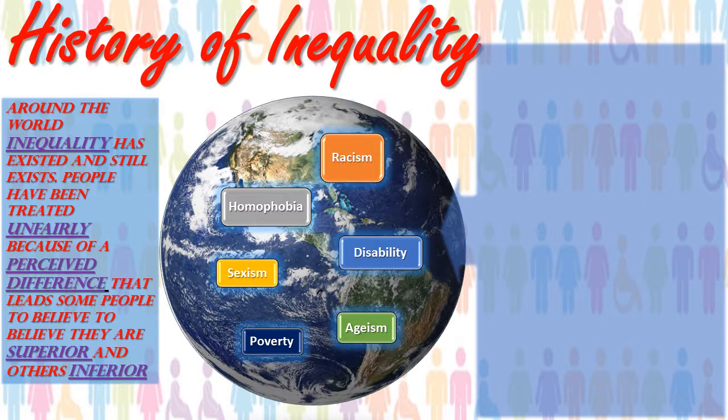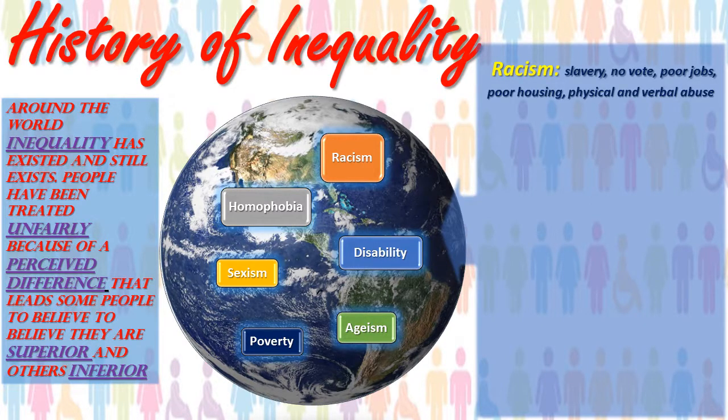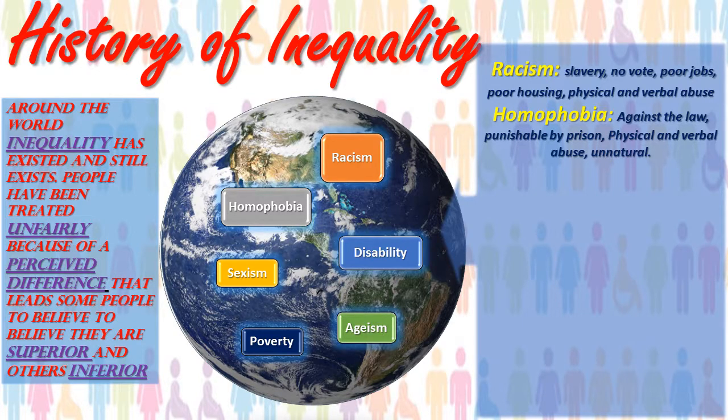Looking at racism in history, you see slavery. Black people weren't allowed to vote. They were given access to very poor jobs, poor housing, and suffered physical and verbal abuse, and in many cases death, simply because of the colour of their skin. Regarding homophobia, it was against the law in the UK. Only over the last 50 years has the law changed so it wasn't punishable by prison. People suffered physical and verbal abuse; it was seen as unnatural, and in some cases you could even be locked up in an asylum.